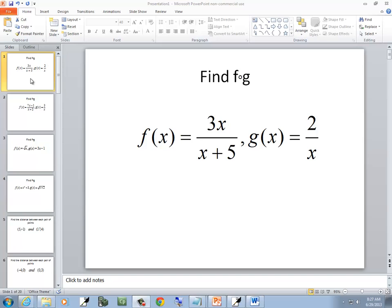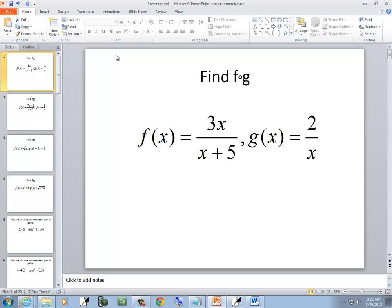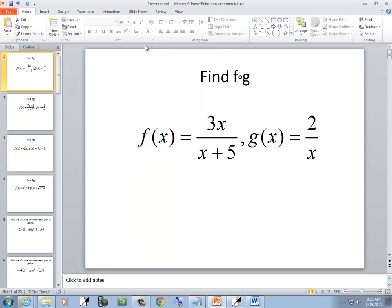In this problem, we want to find a composition of f and g. We've got f of x is equal to 3x over x plus 5, and g of x is equal to 2 over x.